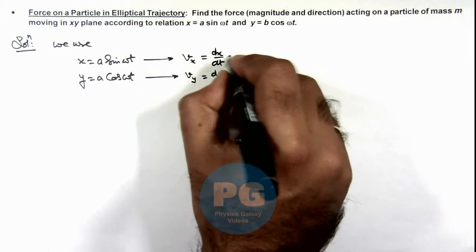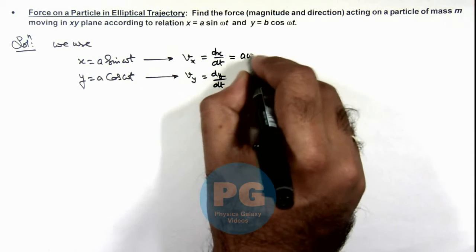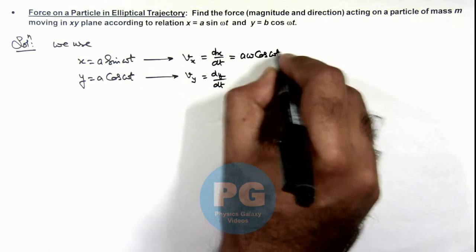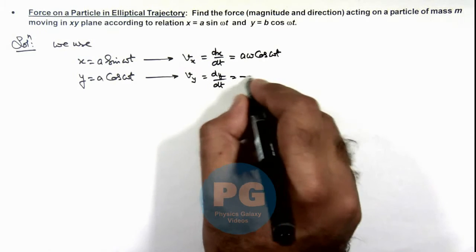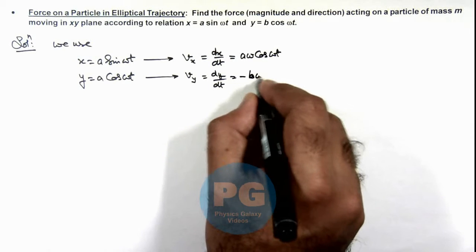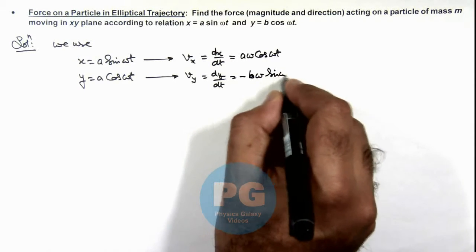So these values are a omega cosine of omega t, and minus b omega sine of omega t.